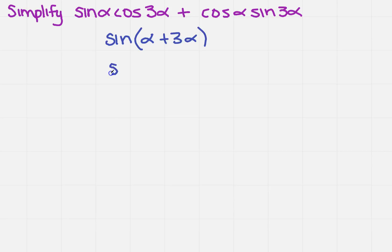I notice I can simplify that even more, right? Alpha plus 3 alpha is 4 alpha. And that's it. It really is that simple. But remember, you have to be able to recognize it to make it that simple.